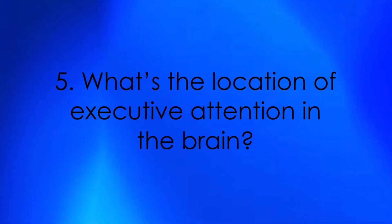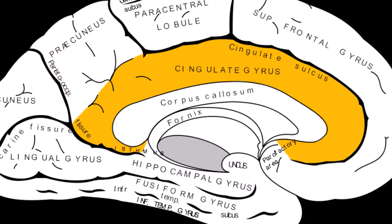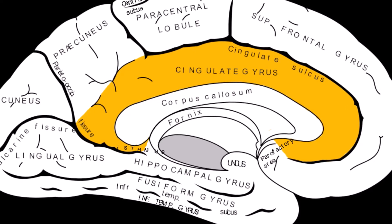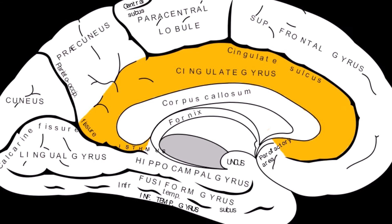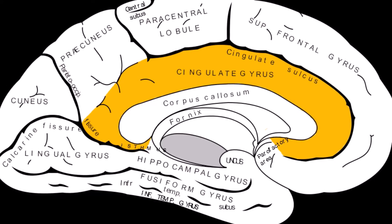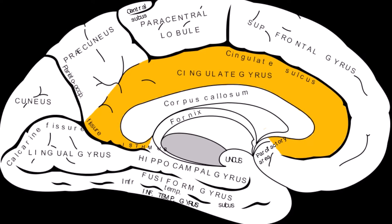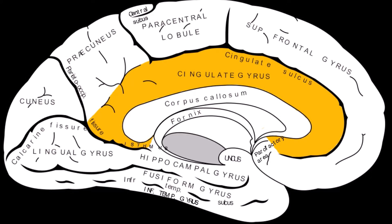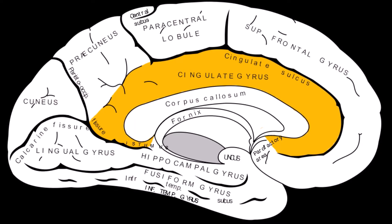What's the location of executive attention in the brain? Brain imaging studies conducted during the Stroop task test have established that the anterior part of the cingulate gyrus, a region in the frontal lobe of the brain, is the location of the executive attentional system. It inhibits the automatic response and selects the correct response.